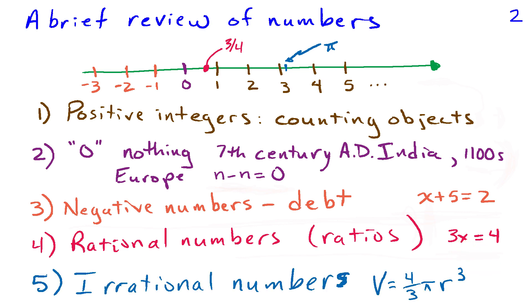And then there's irrational numbers, like pi. The volume of a sphere, it's 4/3 π r³. Pi, of course, is an irrational number. It cannot be expressed as a ratio of integers. That's yet another type of number.